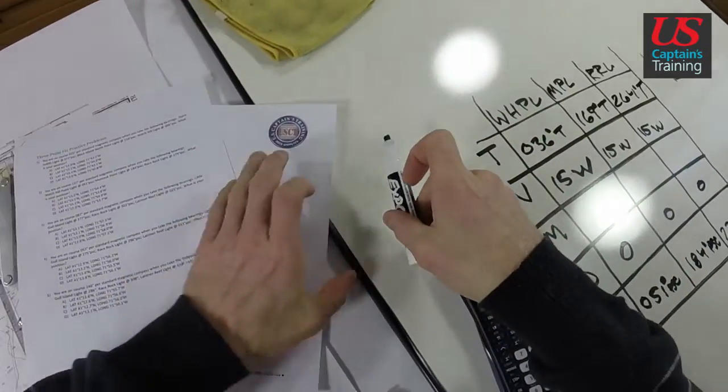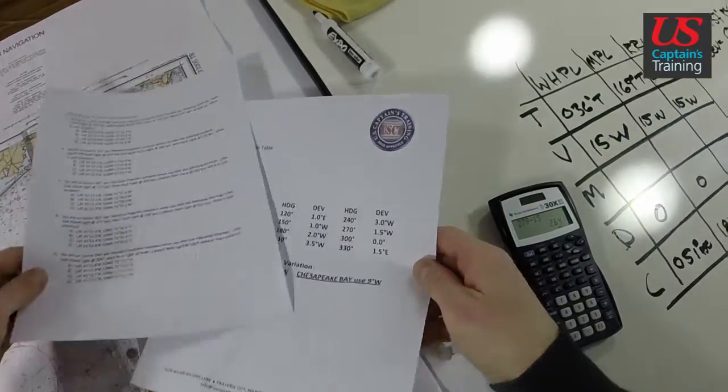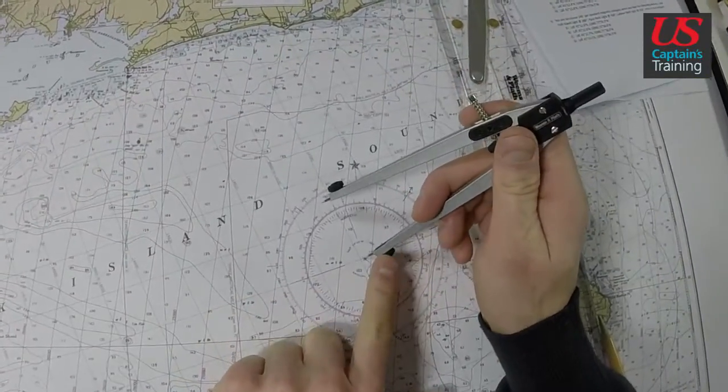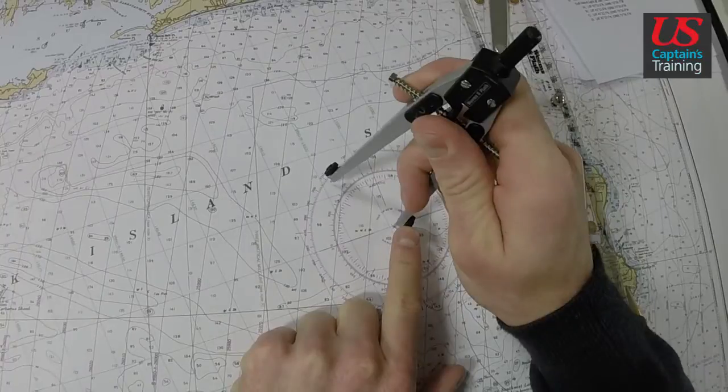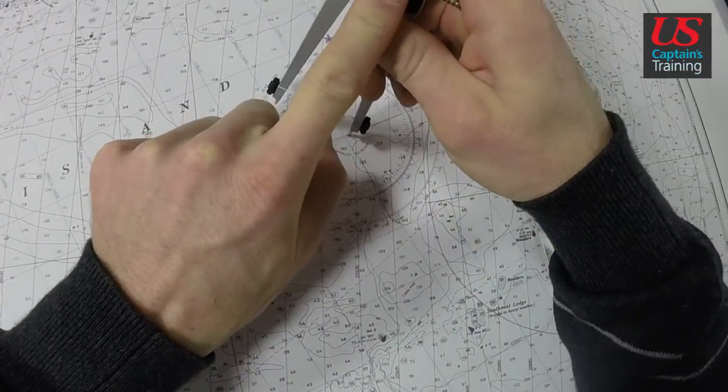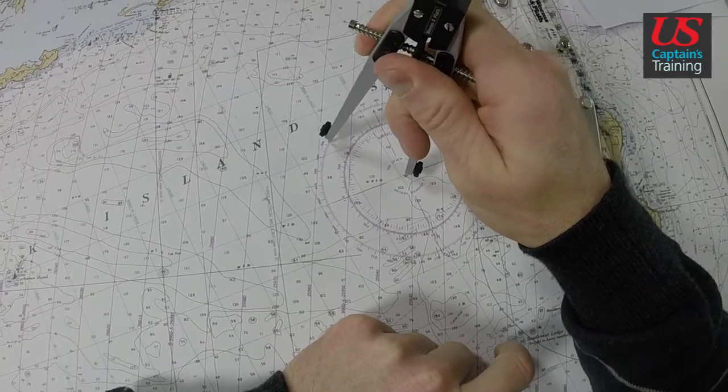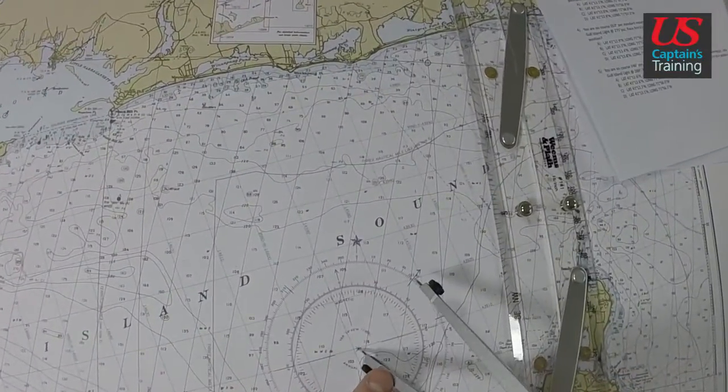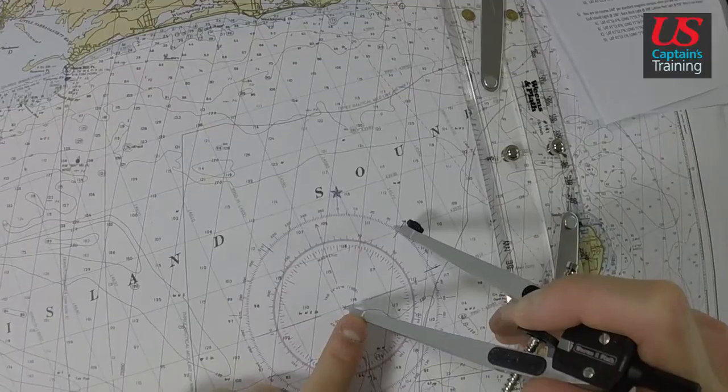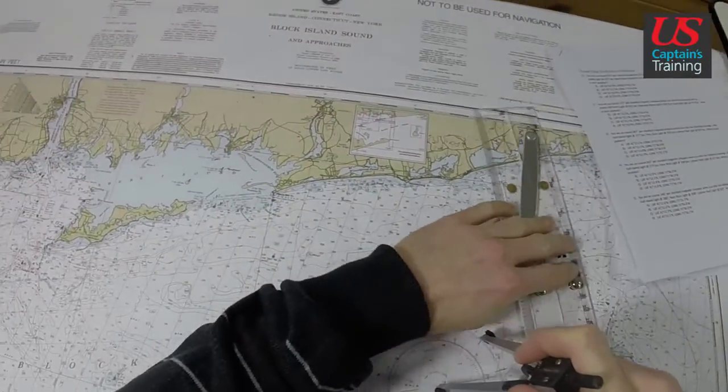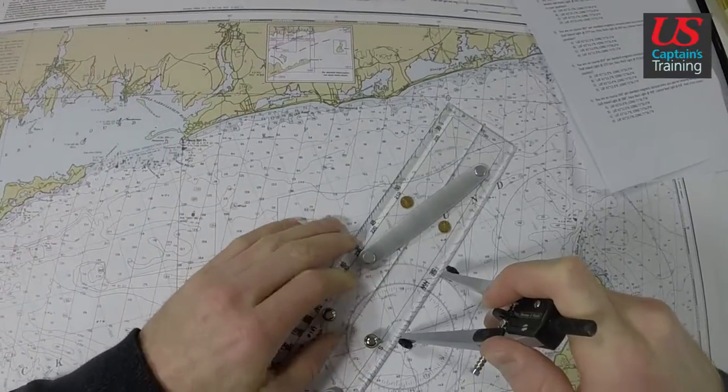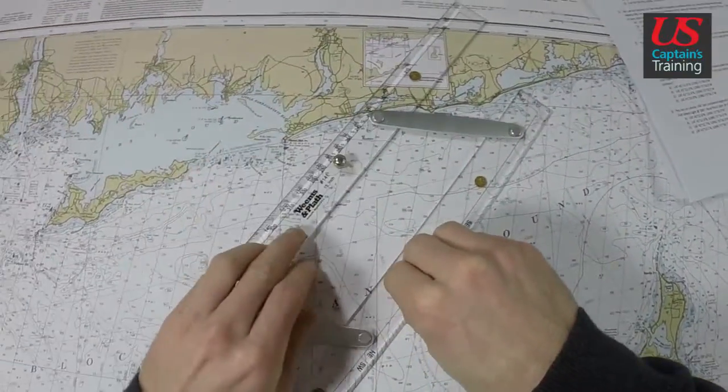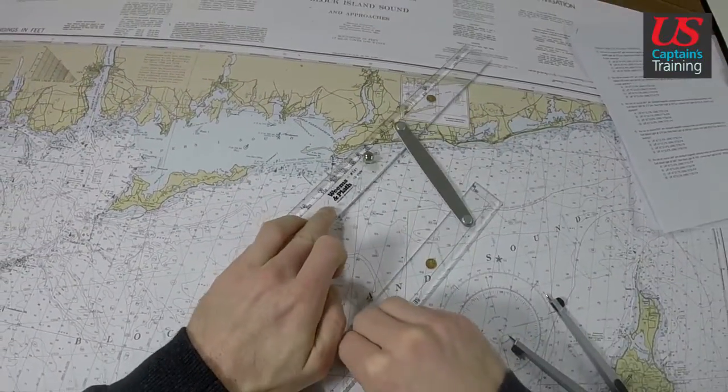Let's plot these out. We'll take the dividers right in the middle. Now we're over to degrees. So we get 036 from Watch Hill Point Light - 033, 035, 036 from Watch Hill Point Light, it's right here.